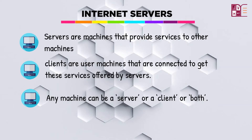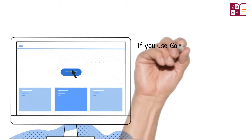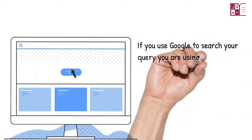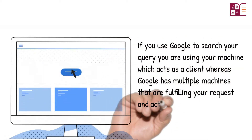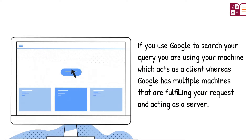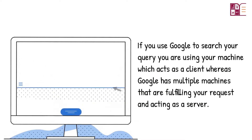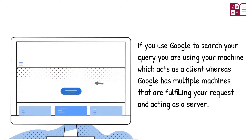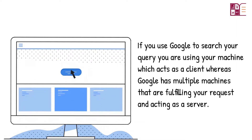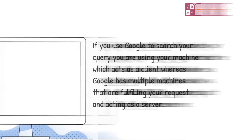Any machine can be a server or a client, or both. For example, if you use Google to search a query, you are using your machine which acts as a client, whereas Google has multiple machines that are fulfilling your request and acting as a server.